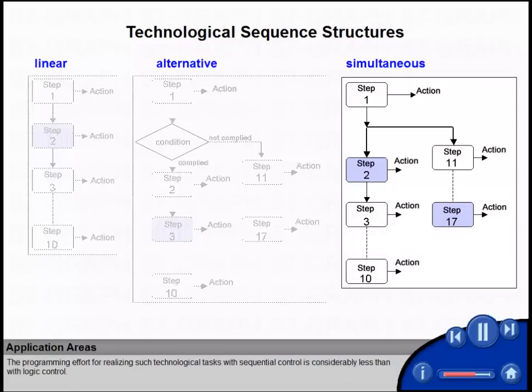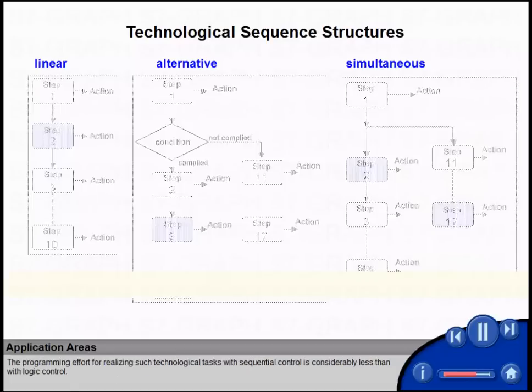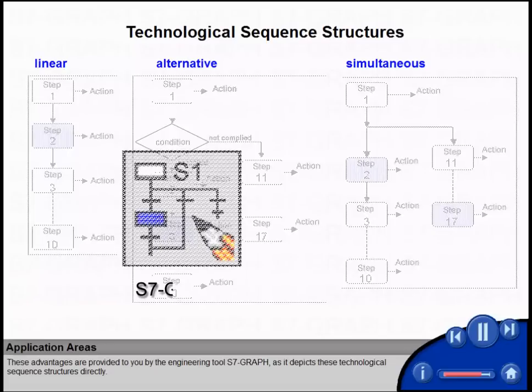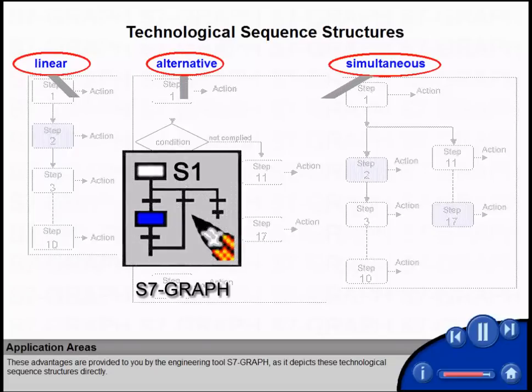The programming effort for realizing such technological tasks with sequential control is considerably less than with logic control. These advantages are provided to you by the engineering tool S7-GRAPH, as it depicts these technological sequence structures directly.